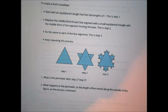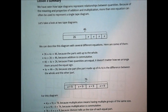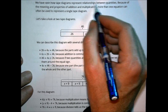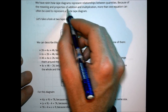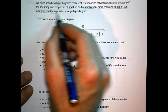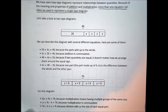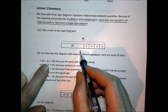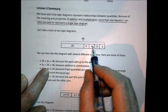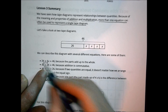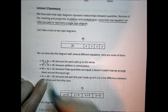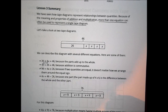We'll skip the 'Are you ready for more?' star activity. The summary of today's lesson is this: tape diagrams represent relationships between quantities. Because of properties of addition and multiplication, more than one equation can represent a single tape diagram. For example, 26 plus 4x equals 46 can also be written as 4x plus 26 equals 46, or with 46 on the left — all the same equation, same solution.